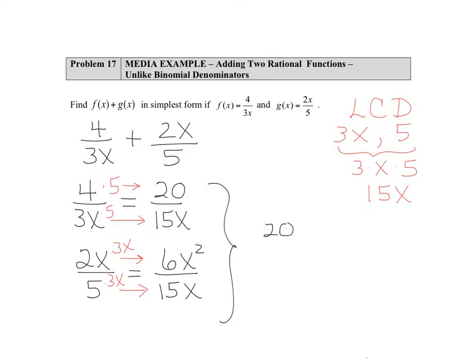So we have 20 over 15x plus 6x squared over 15x. Now that we have common denominators, we can bring this together as one big fraction with that common denominator of 15x. So from the first fraction we'd have 20 plus from the second one 6x squared.